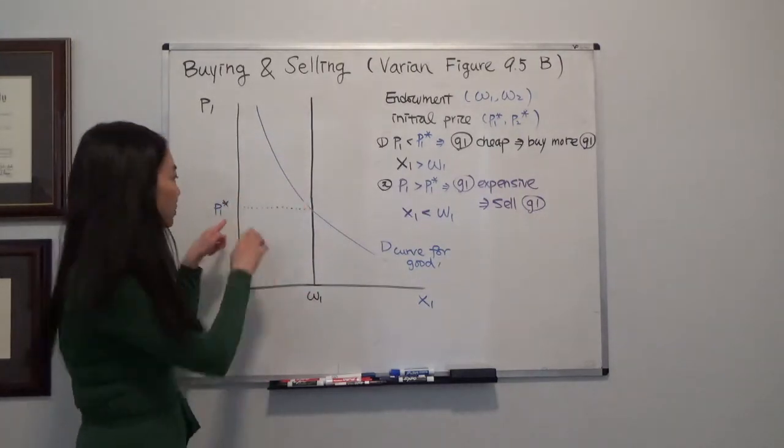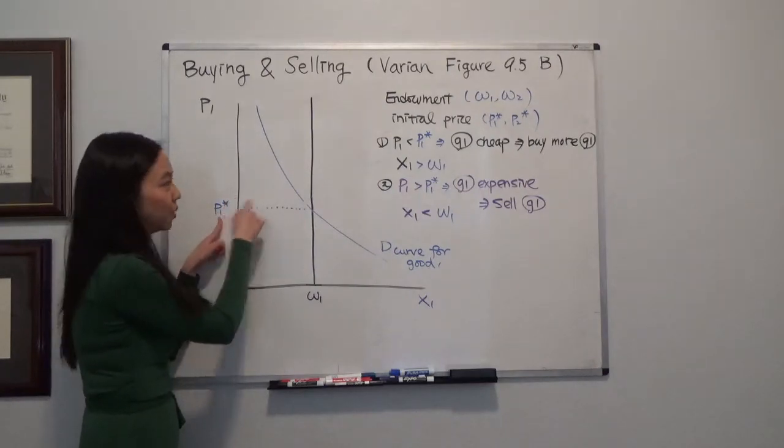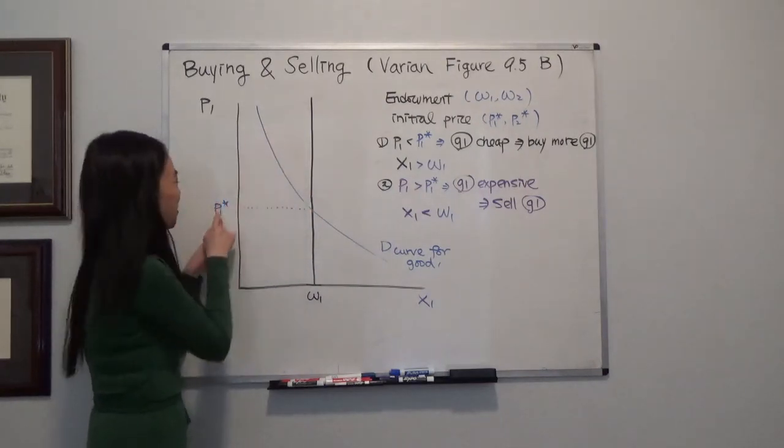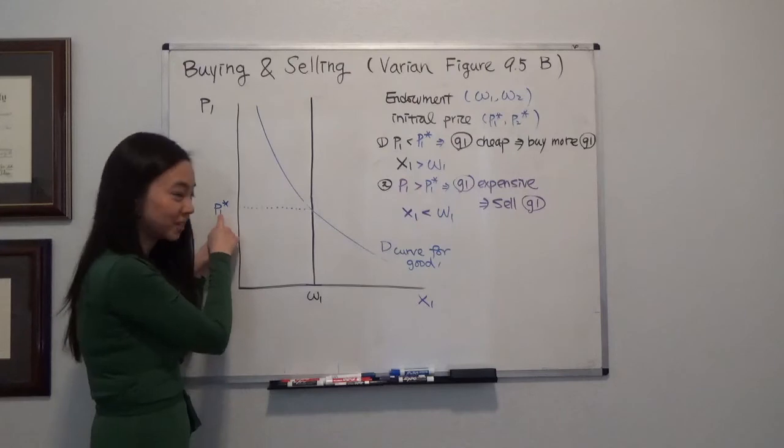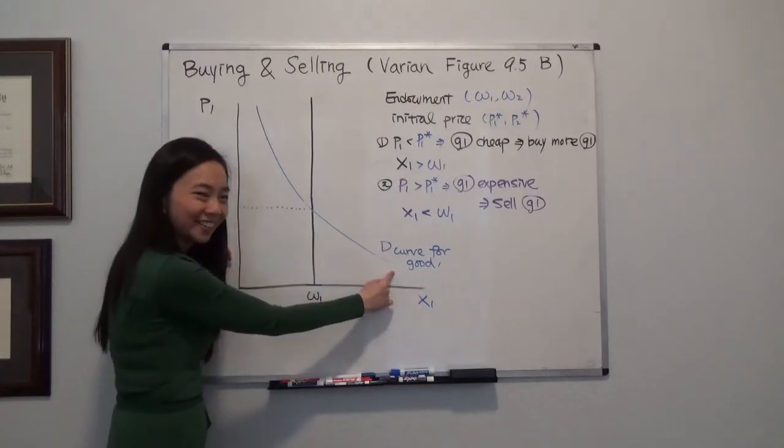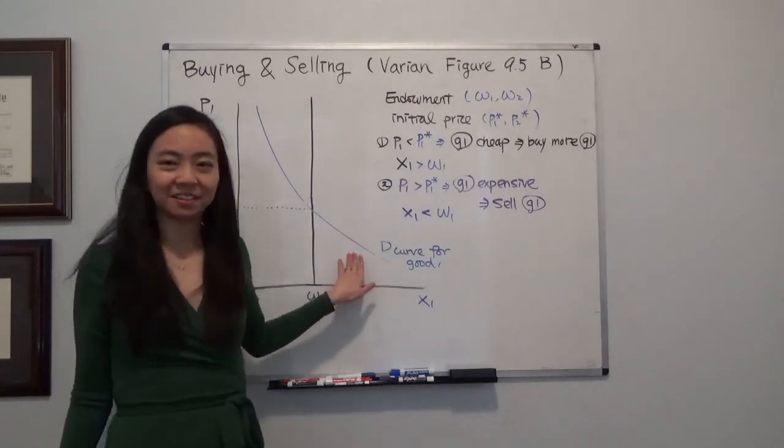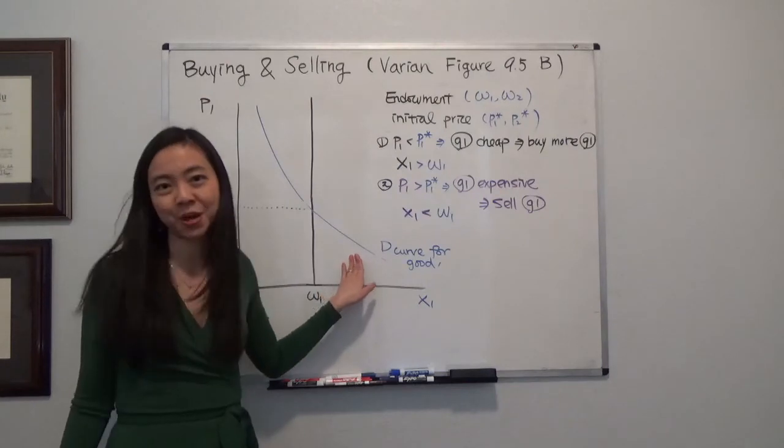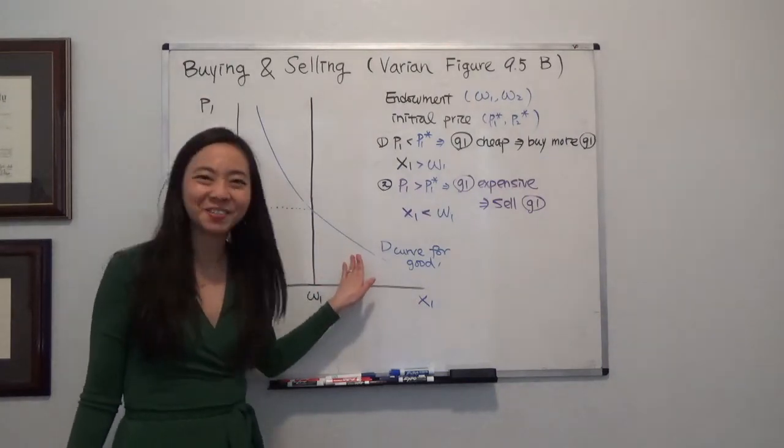So you can see that when the price is higher than P1 star, I consume less. When the price is lower than P1 star, I consume more. So that's the reason why I can derive the demand curve for good 1. I hope this helps, and I'll see you next time.